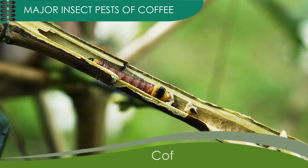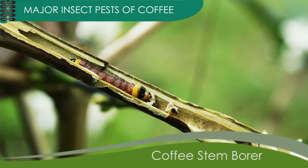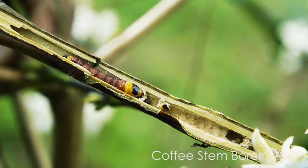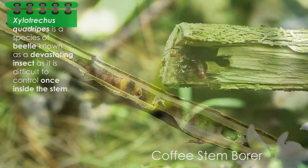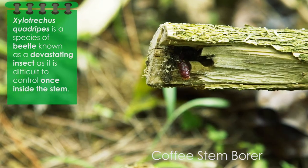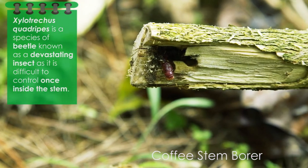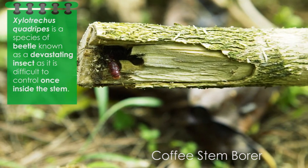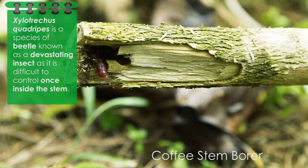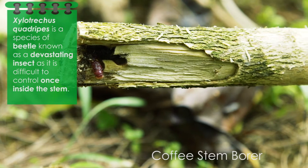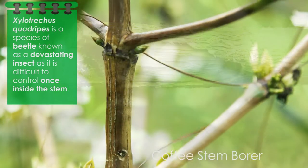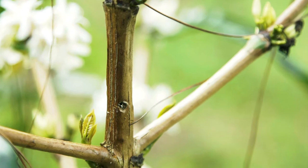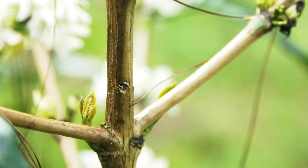Another major insect pest of coffee is the stem borer. The stem borer, or Silo tracheus quadripes, is a species of beetle known as a devastating insect, as it is difficult to control once inside the stem.